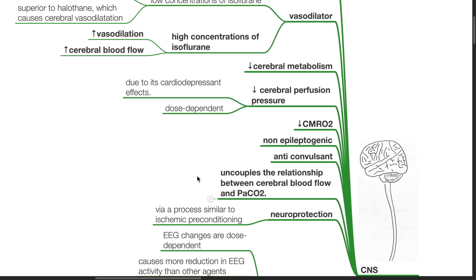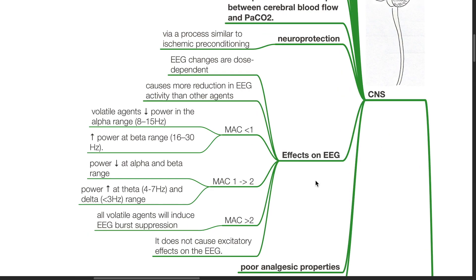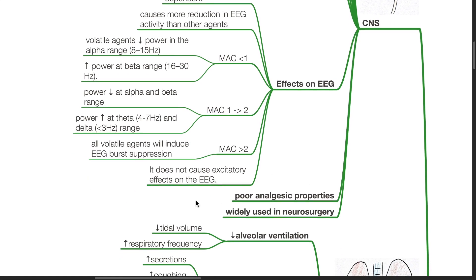Isoflurane uncouples the relationship between cerebral blood flow and PaCO2. Neuroprotection occurs via a process similar to ischemic preconditioning. Isoflurane causes dose-dependent depression of EEG. There are no excitatory effects on the EEG. Isoflurane has poor analgesic properties. Isoflurane is widely used in neurosurgery.